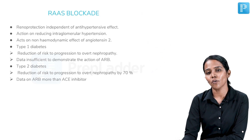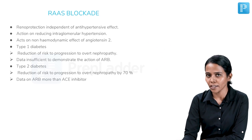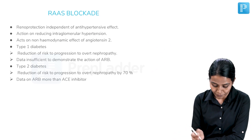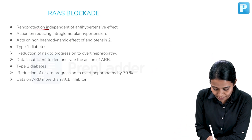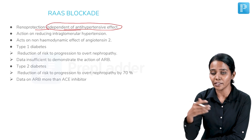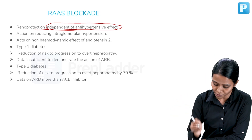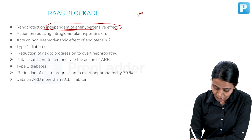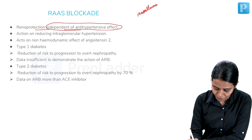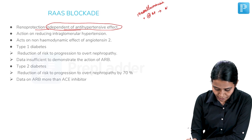What is the significance of RAS blockade in patients with diabetes? It has renal protection that is independent of the antihypertensive effect — that is very important. Whether the antihypertensive effect is there or not, in a patient with microalbuminuria, even with normal blood pressure, ACE inhibitor or ARB has to be initiated.